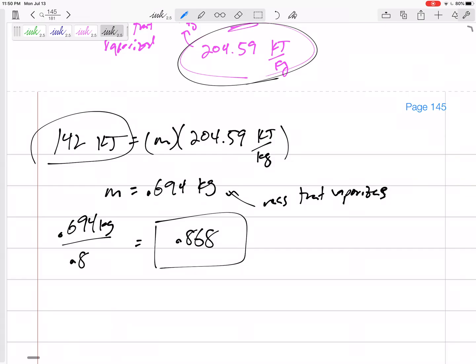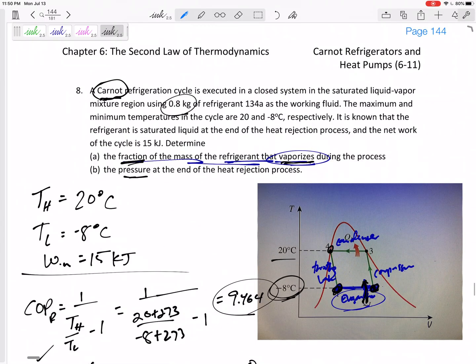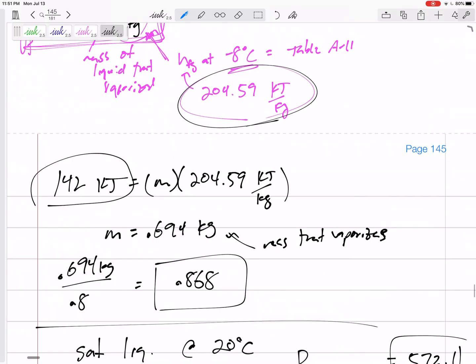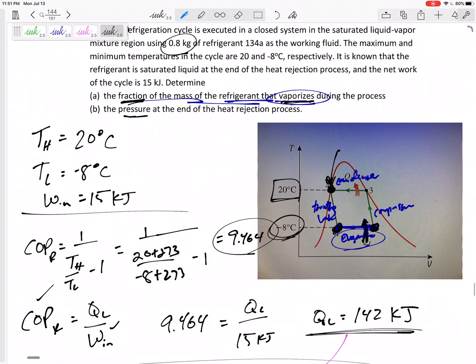We'll move on. Part number two is just the pressure at the end of the heat rejection process. That would be at state 4. If we're at a temperature of 20°C and it is saturated liquid, remember those property tables. If I know it is saturated liquid and at 20°C, then I would go to the temperature table or pressure table, and the pressure would be P sat at 20°C, which is 572.1 kPa.